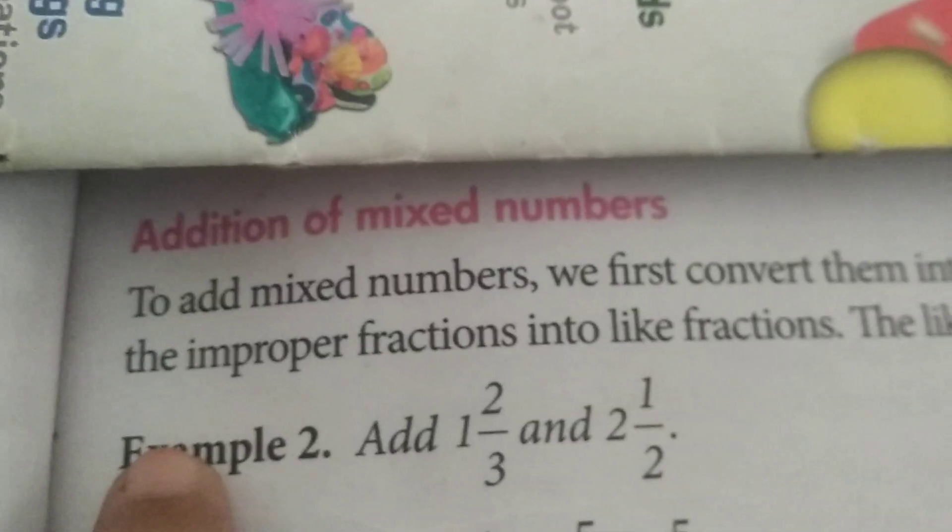To add mixed numbers, we first convert them into improper fractions and then convert the improper fractions into like fractions. Like fractions so obtained are added as usual.